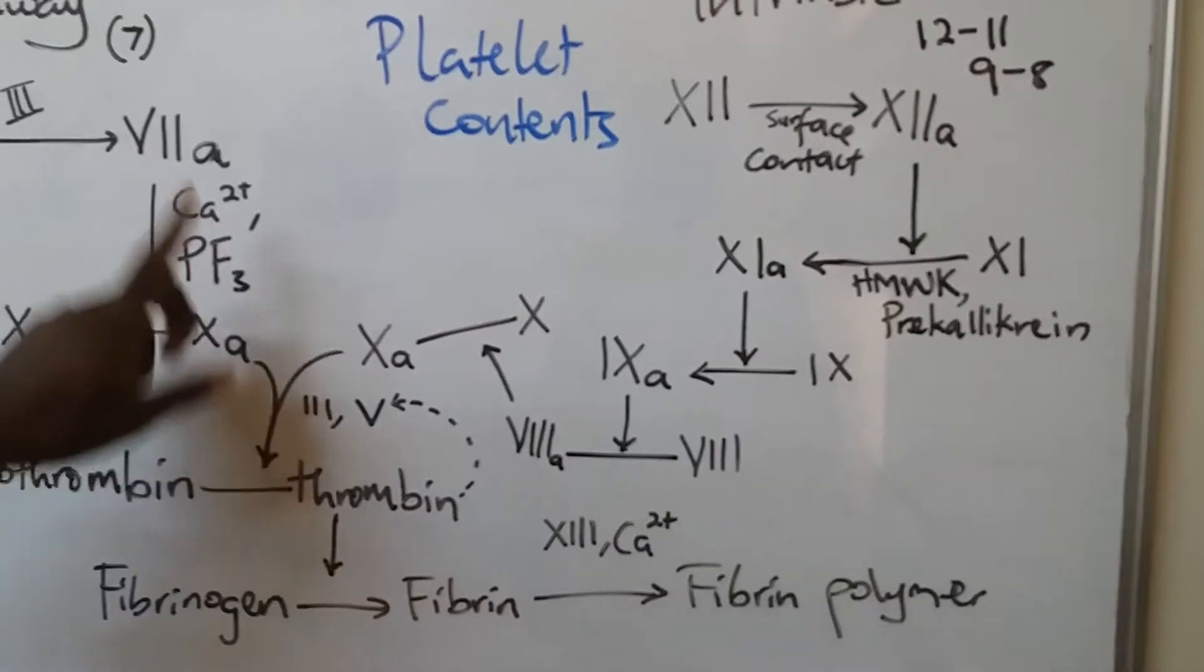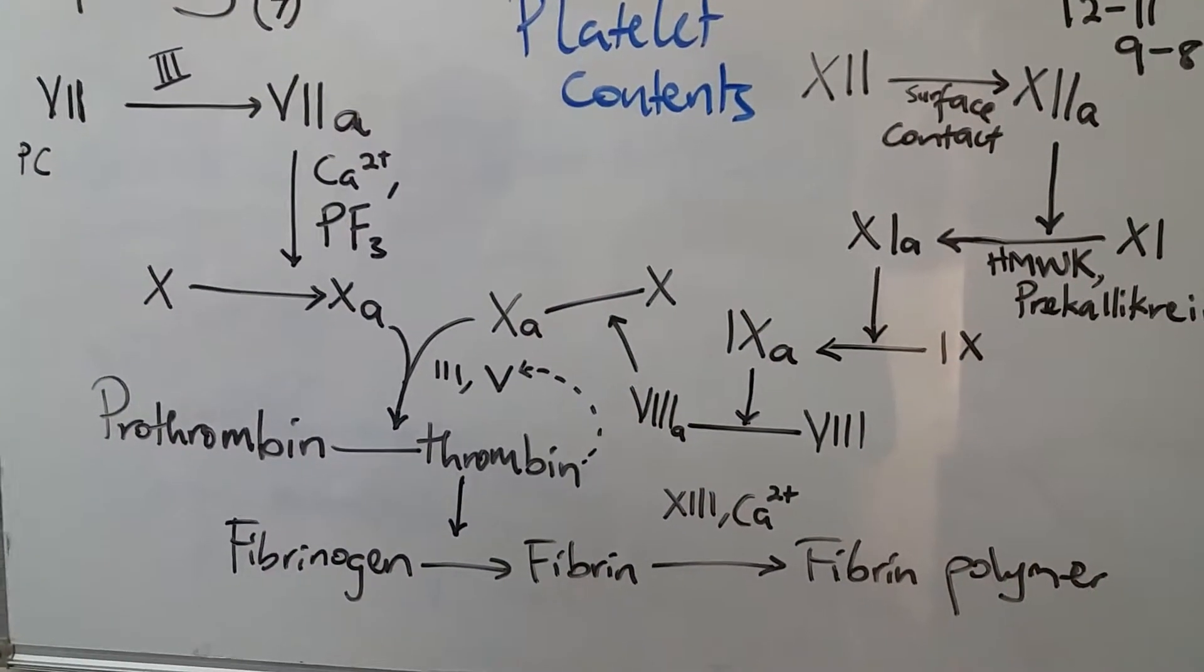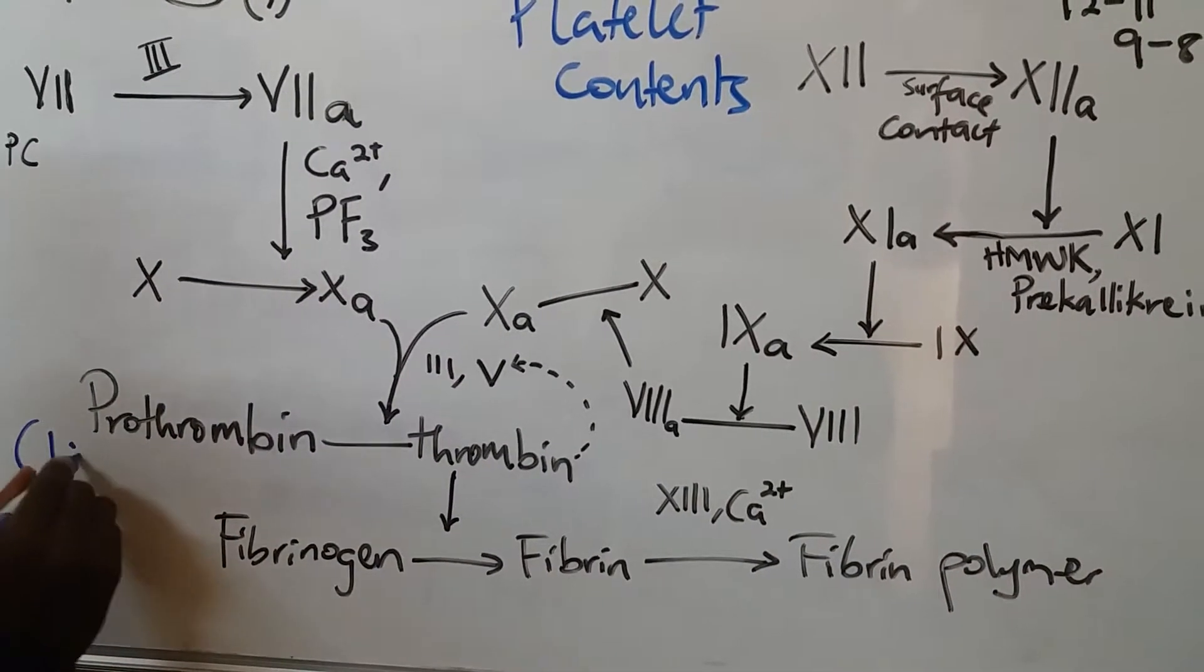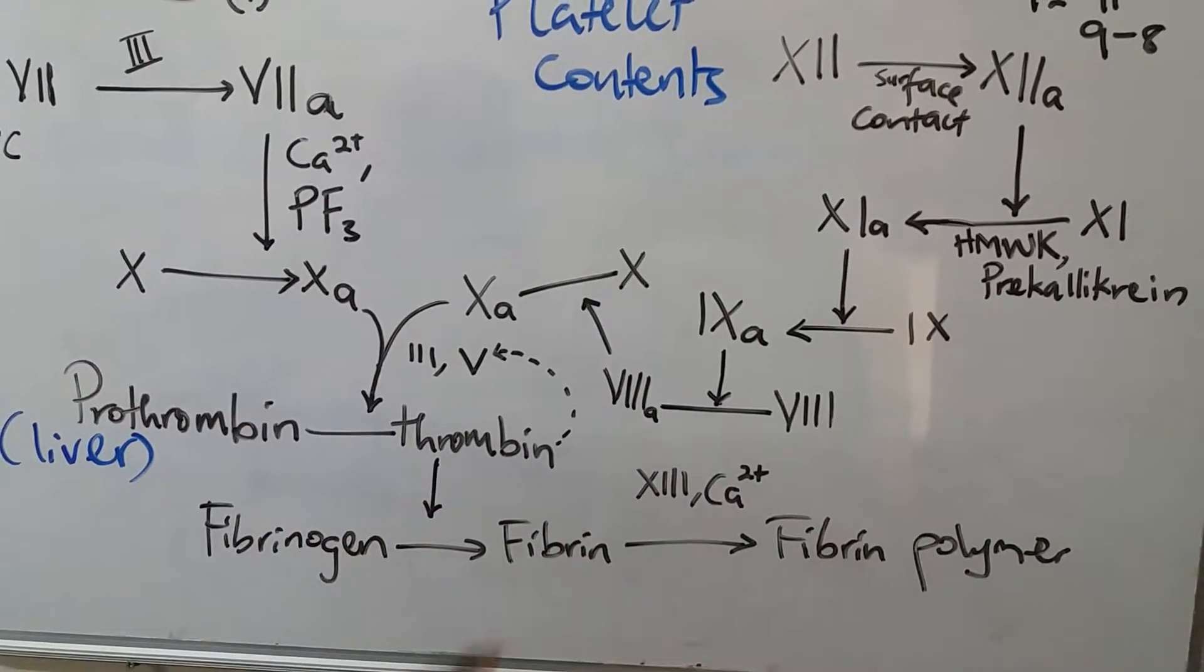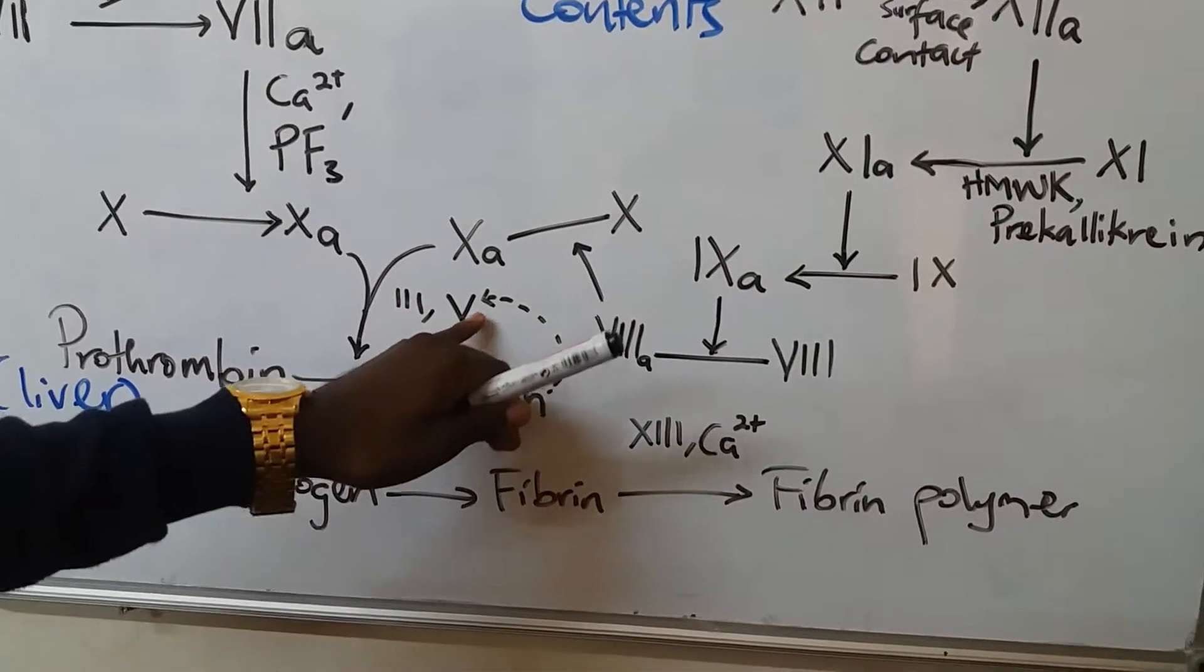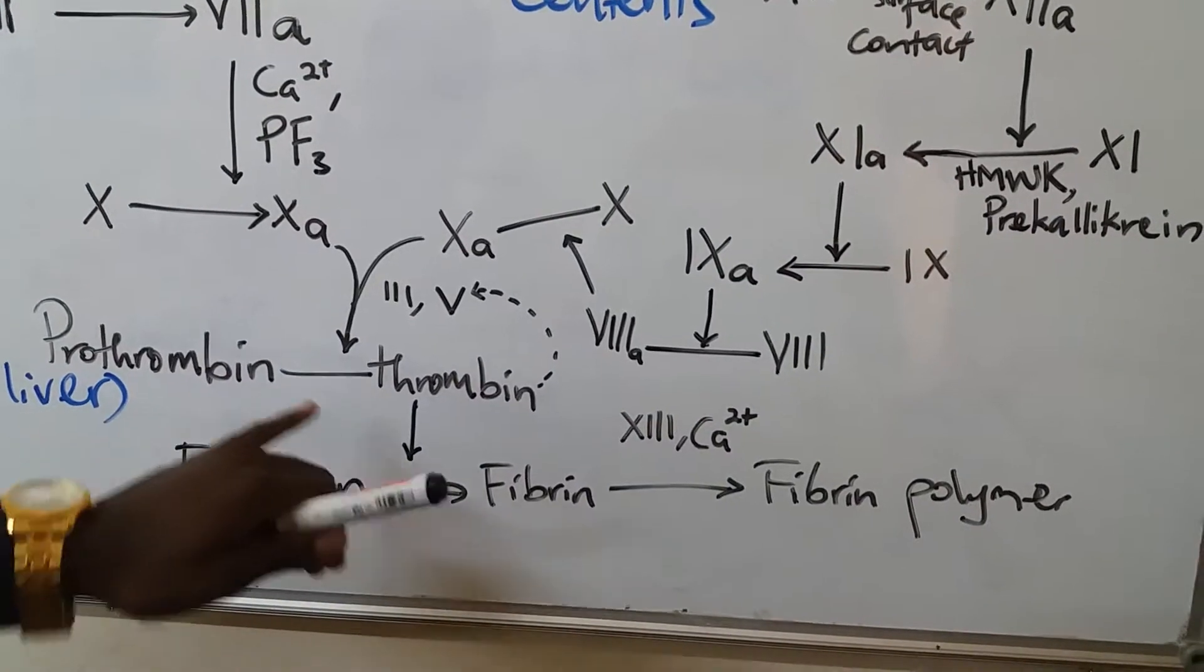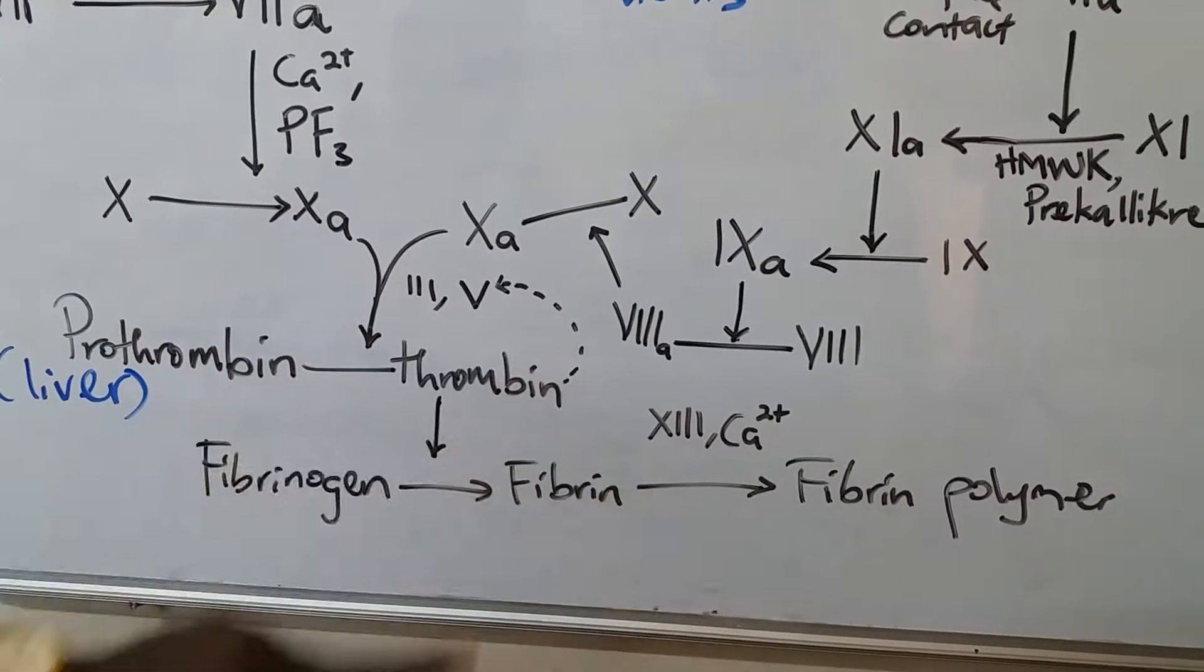We are back here where we have activated 10. Activated 10 will activate prothrombin, which is from the liver. After the formation of thrombin, it will also further activate more clotting factor 5. This process of activation of prothrombin also involves tissue factor and clotting factor 5, which is also called labile factor.